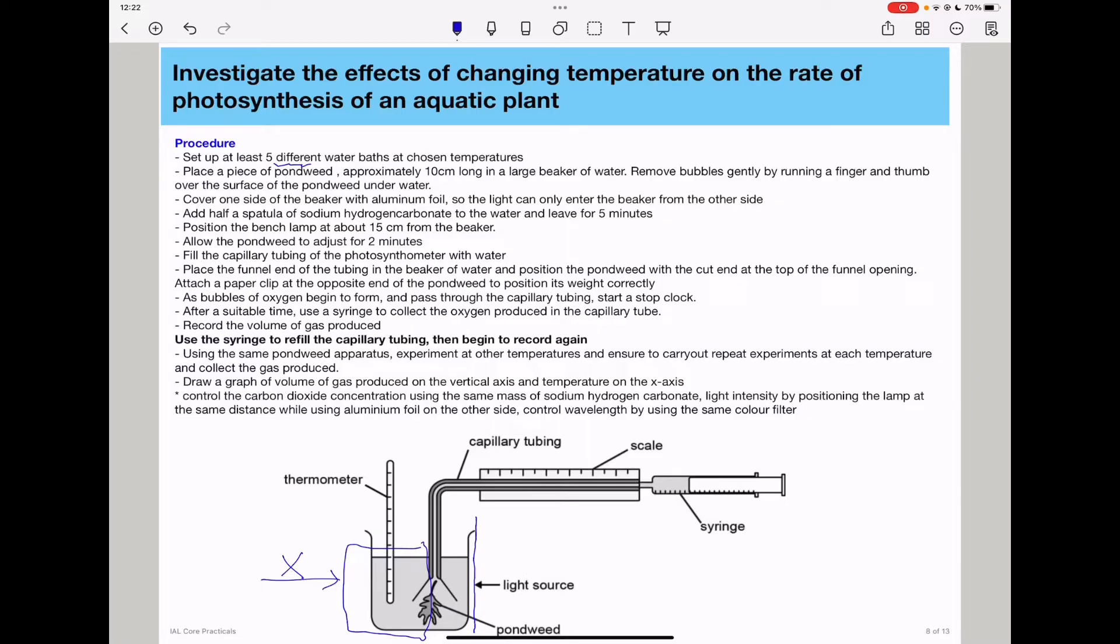The next part is to cover one side of the beaker with aluminum foil so that the light can only enter the beaker from the other side, meaning the place where we can control the amount of light entering the beaker, and that is this side.